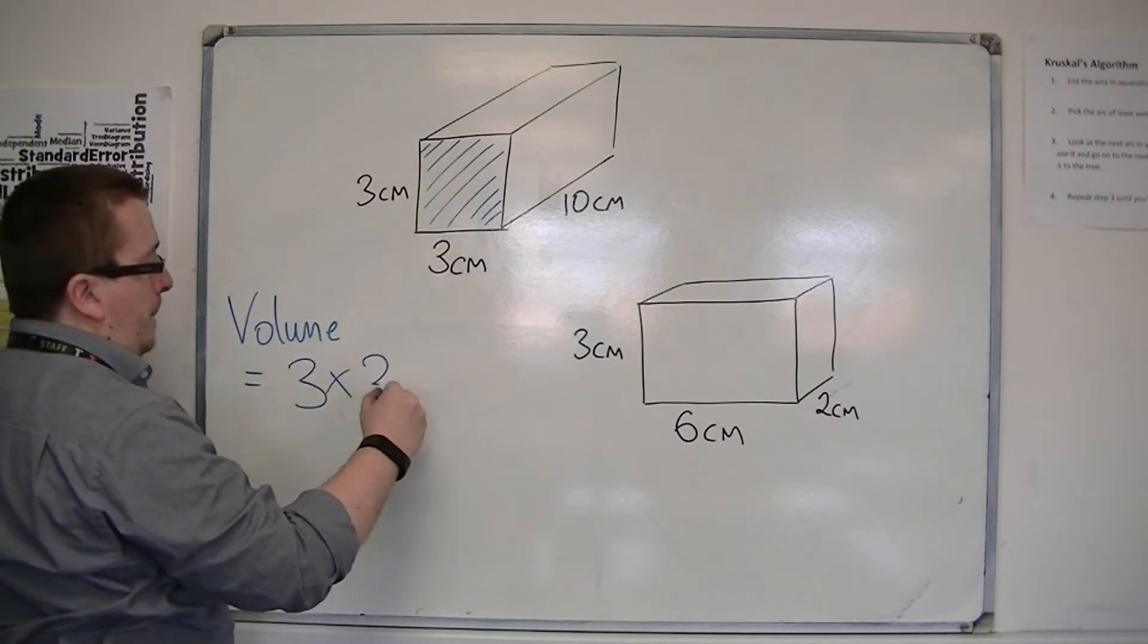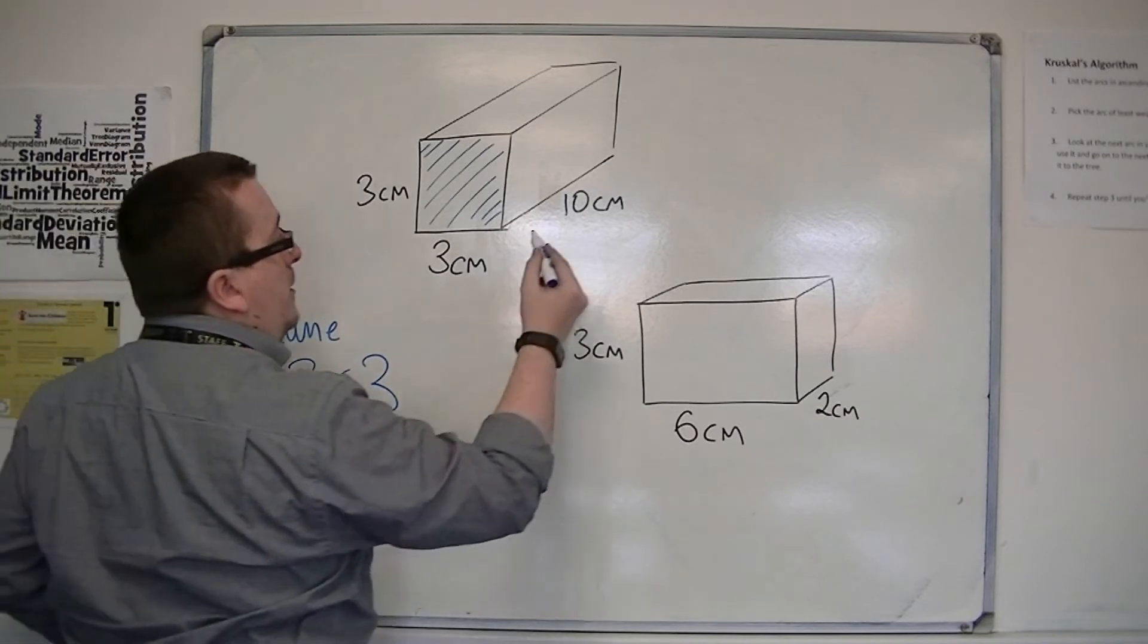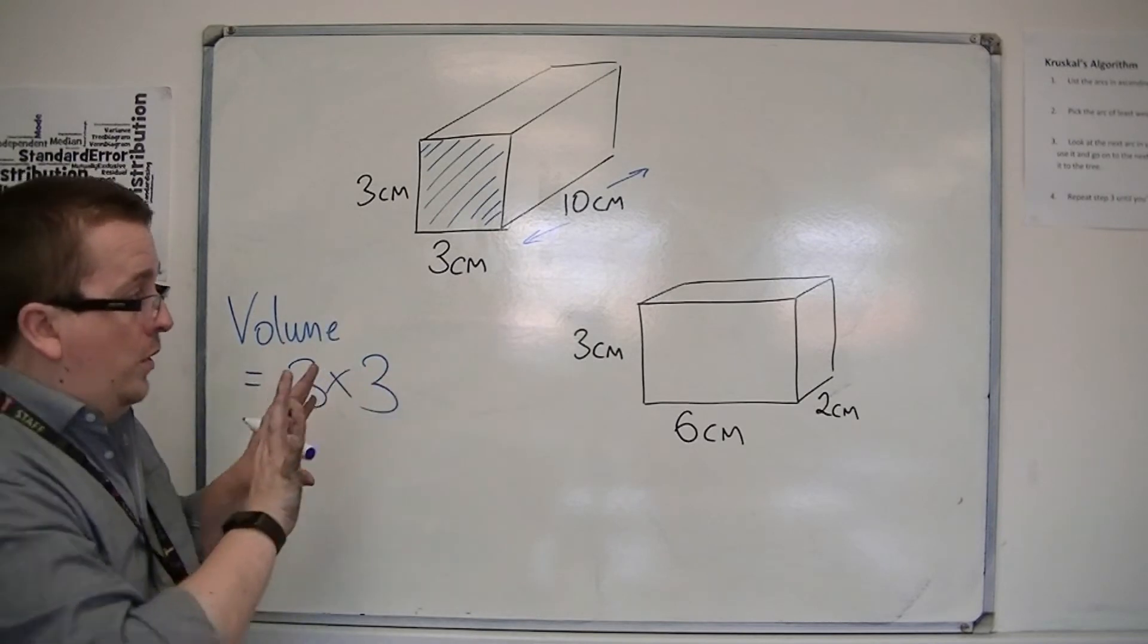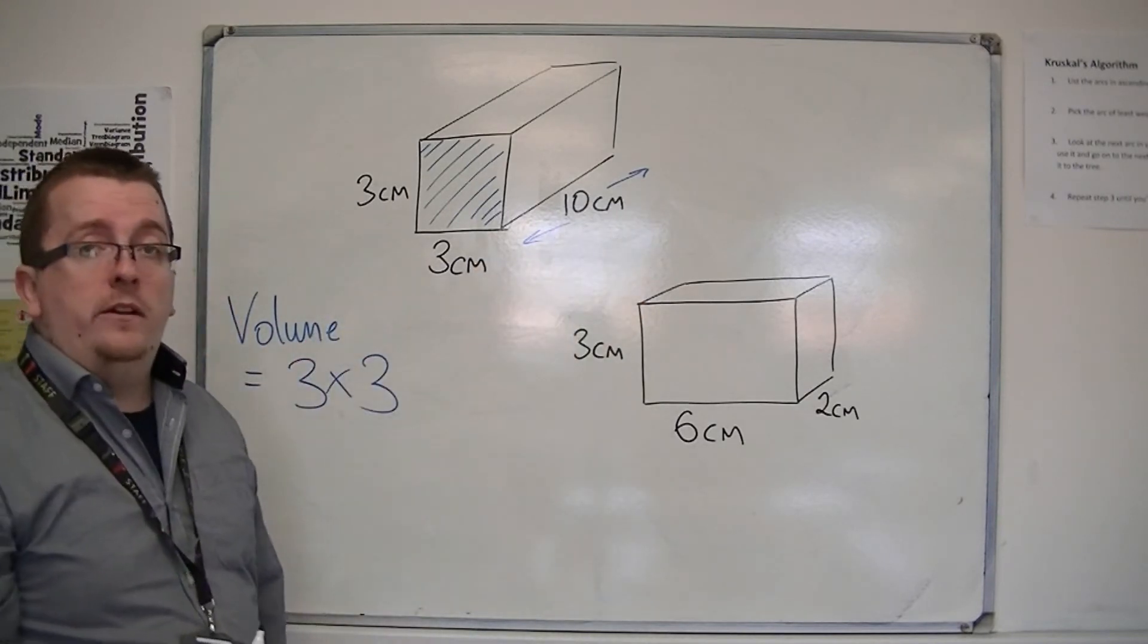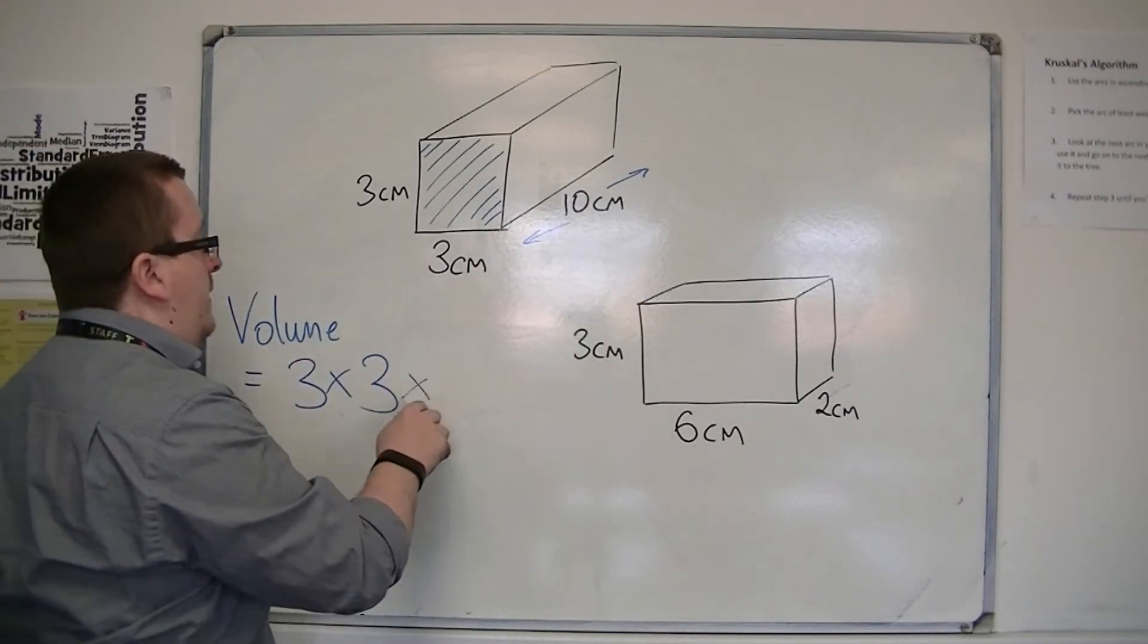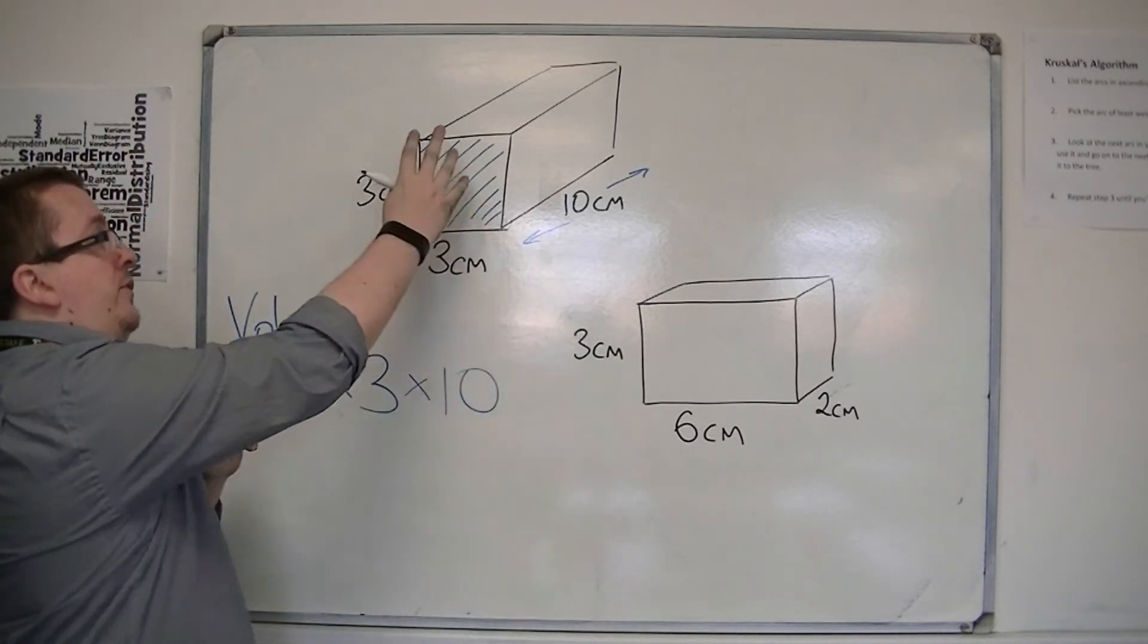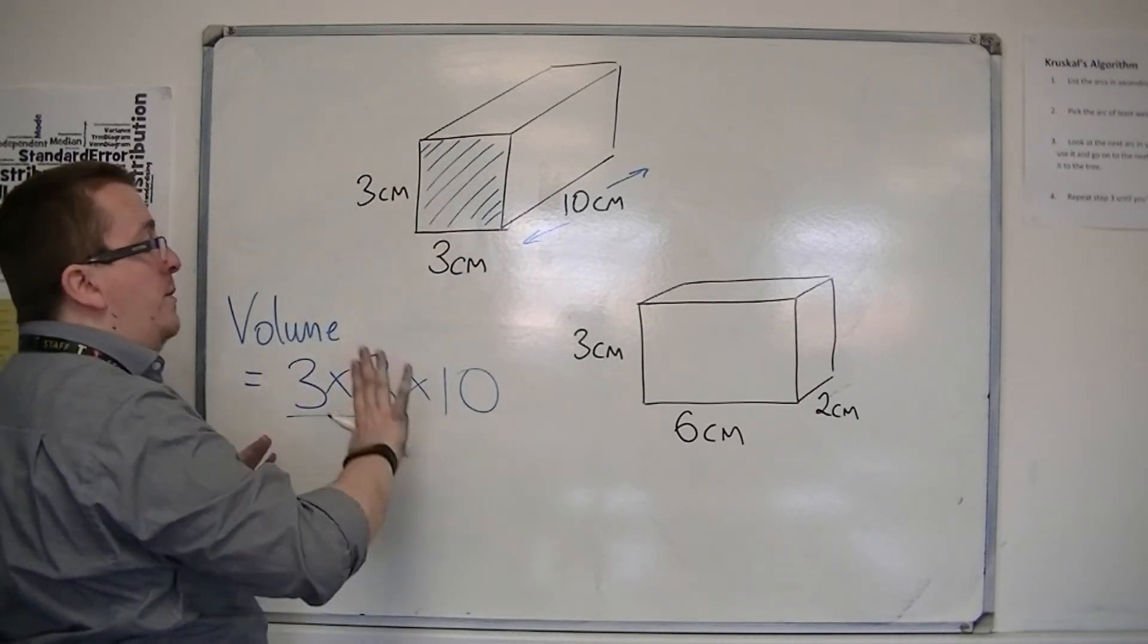Multiplied by the length of the shape, or the depth of the shape. So how far back does the shape go? So you multiply that by the depth of the shape. So it's the front area of the face multiplied by the depth.